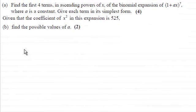Hi there. Now in this question, part a, we've got to find the first four terms in ascending powers of x of the binomial expansion (1 + ax) to the power 7, where a is a constant. We've got to give each term in its simplest form for four marks. So if you'd like to try this first part, I'll just give you a moment to pause the video.